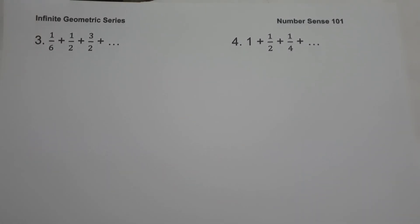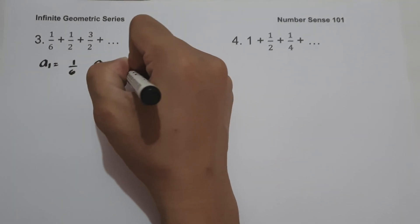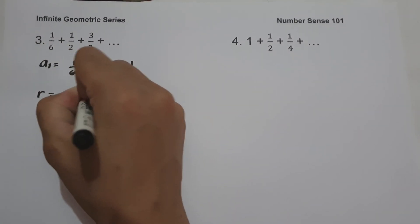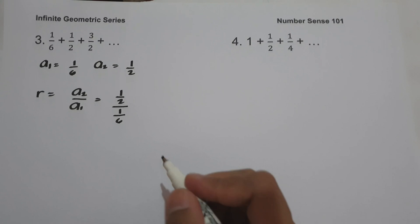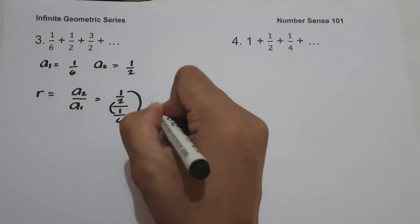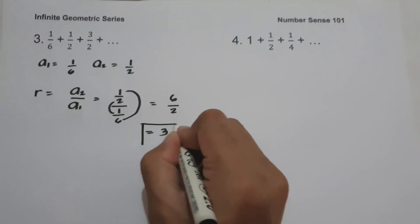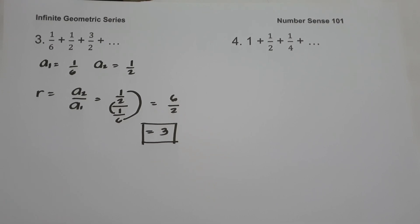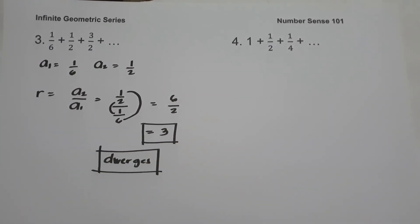On example number 3, we have 1/6 plus 1/2 plus 3/2 up to infinity. We first check whether the series is diverged or converged by finding the common ratio. The first term is 1/6 and the second term is 1/2. Dividing the second term by the first: 1/2 divided by 1/6. Multiplying outer and inner parts gives 1×6 over 2×1, which is 6/2 equals 3. Since the common ratio is greater than 1, the series is diverged and we cannot determine the sum.